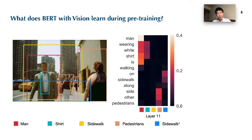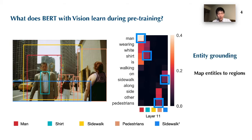In this paper, the question we would like to address is: what does BERT with vision learn during pre-training? We analyze the attention maps of our Visual BERT and find that it acquires a fundamental ability — grounding. We first find that the model can perform entity grounding, in that some attention heads can map entities to image regions. For example, men, shirt, sidewalk, and pedestrians are mapped correctly to the regions.